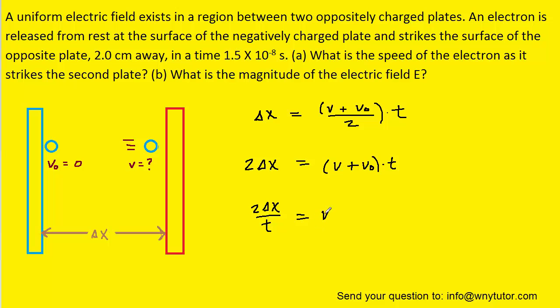And so to calculate the final velocity, we simply need to plug in the displacement, which was given to us in terms of centimeters, and then the time which was given to us in seconds. And when we simplify that final velocity, we can see that it is equal to approximately 2.7 times 10 to the positive 6 meters per second. So that would be the correct answer to part A.